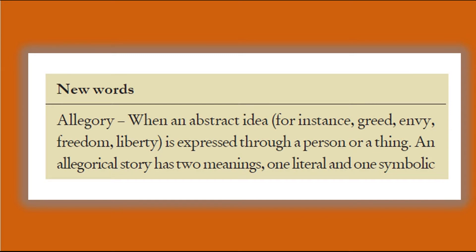What is the meaning of allegory? An allegory is when an abstract idea — for instance greed, envy, freedom, or liberty — is expressed through a person or a thing. An allegory has two meanings: one literal and one symbolic. For example, oak leaves symbolize bravery and readiness for peace. These symbolic meanings are the essence of any allegory.